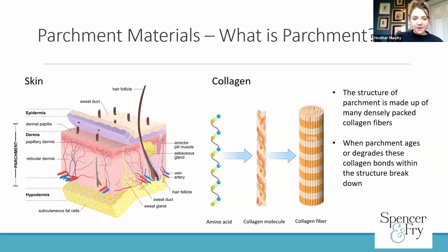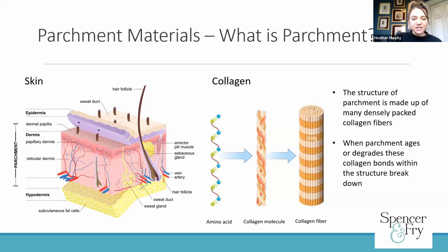A brief overview of the structure of parchment: it's made up of densely packed collagen fibres. When parchment ages or degrades — as we talked about with the paper — it's the collagen bonds within the structure of the parchment that will break down, and that causes the changes to the structure of the parchment itself. Just as the breakdown of the cellulose fibres causes breakdown and changes within the paper as it ages, the breakdown and degradation of this collagen changes the appearance and the behaviours of the material over time.